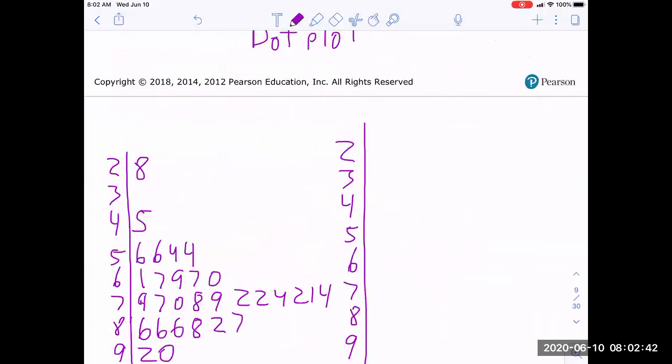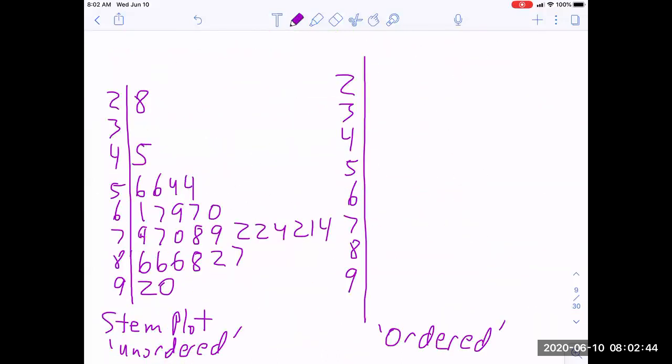I also took this data and made an unordered stem plot whereby I just went through each of the data points and put them on my stems. But notice it's not ordered. So I'm going to quickly make an ordered one just by looking at the unordered one and cleaning it up and try not to make a mistake.